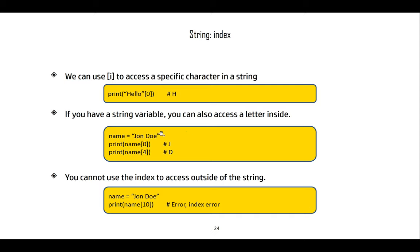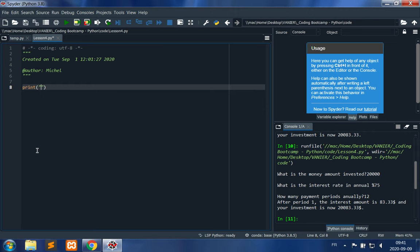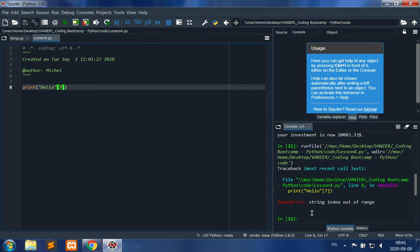If name is 'John Doe', we can access different characters using the index. Name[0] is J, and name[4] is D — counting: 0 is J, 1, 2, 3 is the space, 4 is D. You can't access an index outside the string. If there are only 7 characters, you cannot access index 7 or higher — you'll get a 'string index out of range' error. Accessing index 0 gives the first letter.